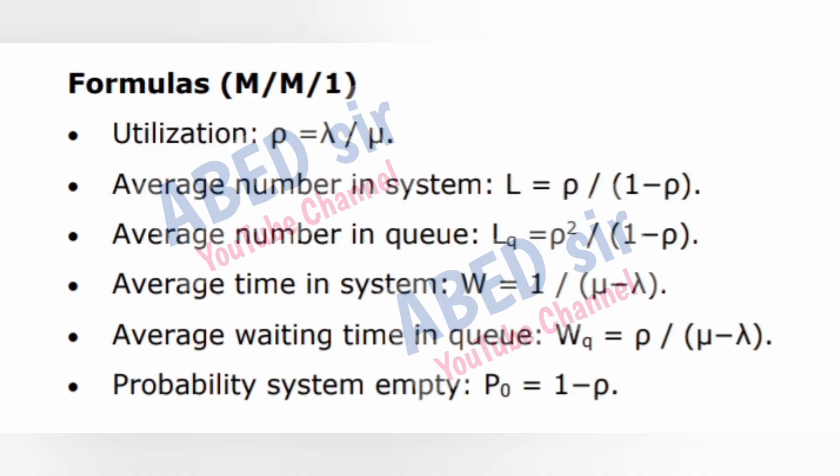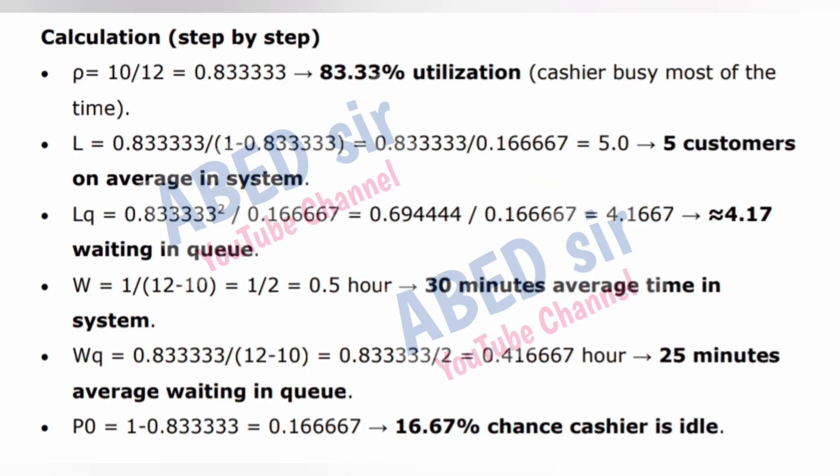Formulas for M/M/1: Utilization ρ = λ/μ. Average number in system L = ρ/(1−ρ). Average number in queue Lq = ρ²/(1−ρ). Average time in system W = 1/(μ−λ). Average waiting time in queue Wq = ρ/(μ−λ). Probability system empty P₀ = 1−ρ. Calculation step by step: ρ = 10/12 = 0.8333 → 83.33% utilization. Cashier busy most of the time.